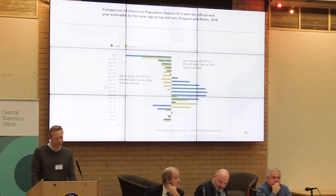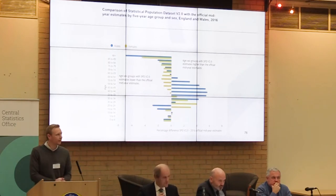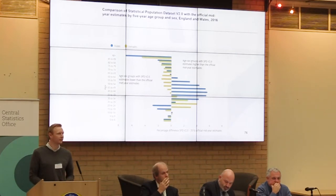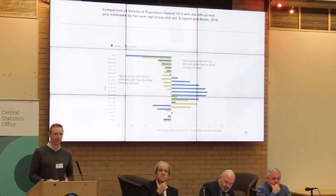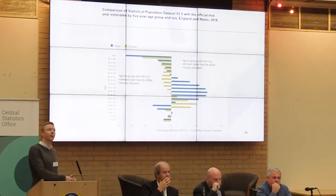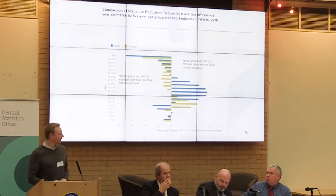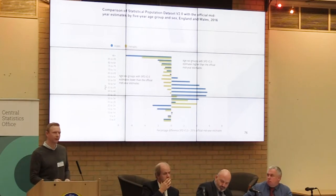For total population, over- and under-coverage tends to net out and you get a reasonable estimate, but it's not a robust way of producing statistics. These biases will have an impact on population projections and similar outputs. Our thinking is that we'll need a coverage survey. For the censuses in 2001 and 2011 we ran a coverage survey — six weeks after the census we do a second enumeration on about 1% of postcodes, so people essentially fill in a census form twice, and we make an adjustment for people that didn't respond, which was about 6% in 2011.